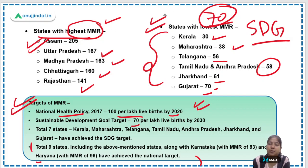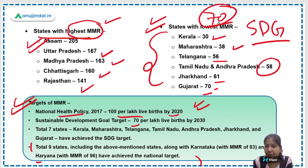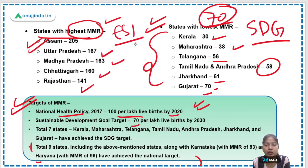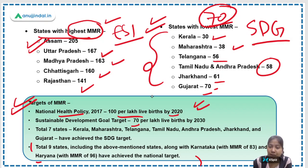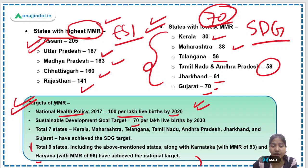This is all the more important from your Phase 1 point of view, and can also be asked in your ESI exam in Phase 2 of RBI Grade B. Prepare and memorize both the lists and the targets in relation to MMR.